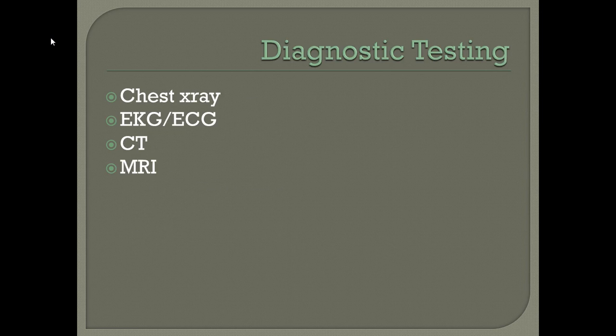For diagnostic testing in CGN, a chest x-ray is used to evaluate heart size and identify cardiomegaly related to CHF. An EKG or ECG is done related to hyperkalemia. A CT scan or MRI shows the actual size of the kidney.